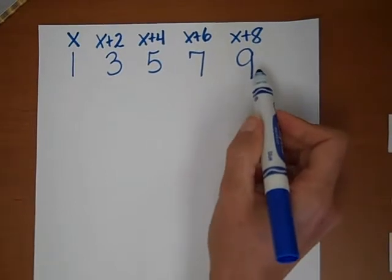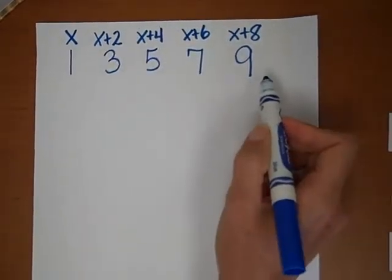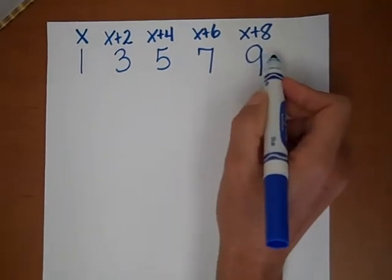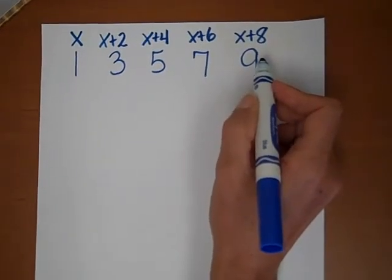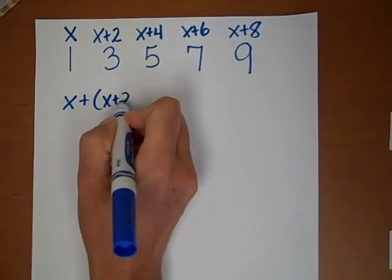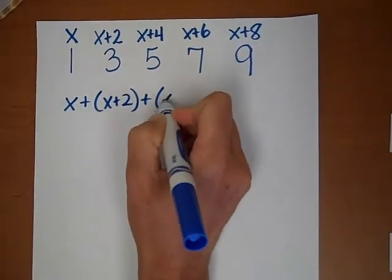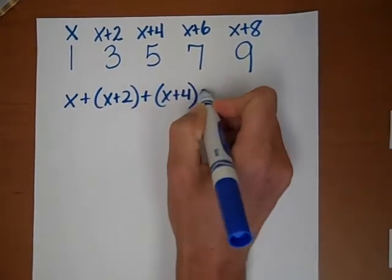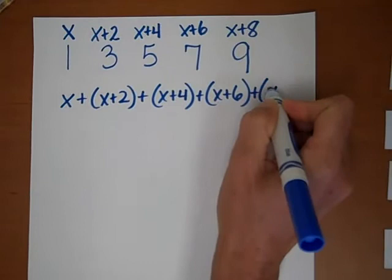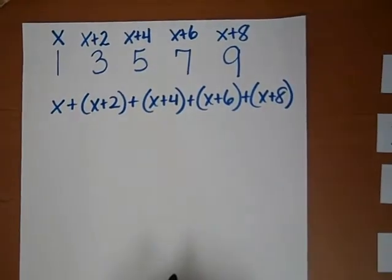Now I'm going to pretend like this could be any number, which now it could, because now we have an x, which is a variable. And then I'm going to combine all of these to get our sum. So I'm going to do x plus x plus 2 plus x plus 4 plus x plus 6 plus x plus 8. And that should be our sum.